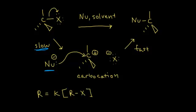That's actually why this is called SN1. The 1 in SN1 stands for unimolecular, meaning the concentration of only one of your reactants — which is your alkyl halide — determines the overall rate. So the first step is the rate-determining step of our mechanism.